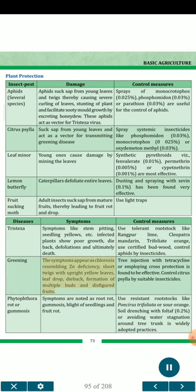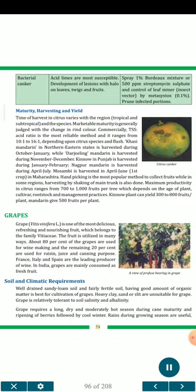Diseases. Tristeza: Symptoms like stem pitting, seedling yellows, etc.; infected plants show poor growth, die-back, defoliation and ultimately death. Use tolerant rootstocks like Rangpur lime, Cleopatra mandarin, trifoliate orange; use certified budwood; control aphids by insecticides. Greening: Symptoms appear as chlorosis resembling zinc deficiency, short twigs with upright yellow leaves, leaf drop, die-back, formation of multiple buds and disfigured fruits. Tree injection with tetracycline or employing cross-protection is effective; control citrus psylla by suitable insecticides. Phytophthora rot or Gummosis: Symptoms include root rot, gummosis, blight of seedlings and fruit rot. Use resistant rootstocks like Poncirus trifoliata or sour orange; soil drenching with foltaf 0.2% or avoiding water stagnation around tree trunk is widely adopted. Bacterial Canker: Acid limes are most susceptible; development of lesions with halo on leaves, twigs and fruits. Spray 1% Bordeaux mixture or 500 ppm streptomycin sulfate and control leaf miner (insect vector) by metasystox 0.1%; prune infected portions.